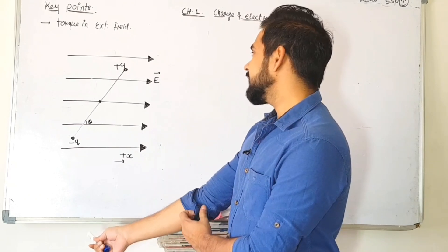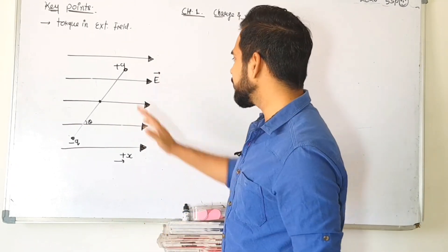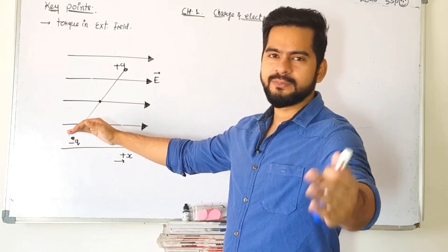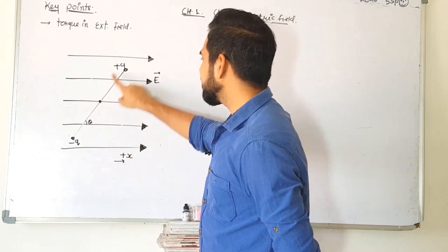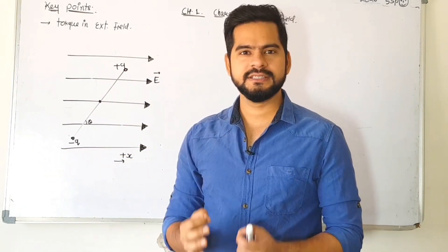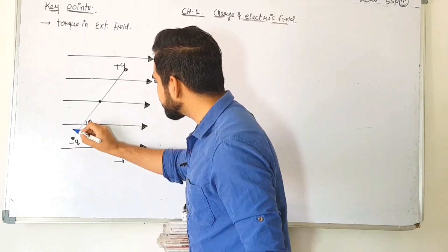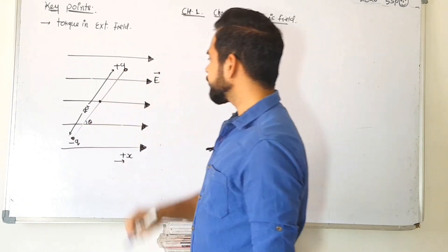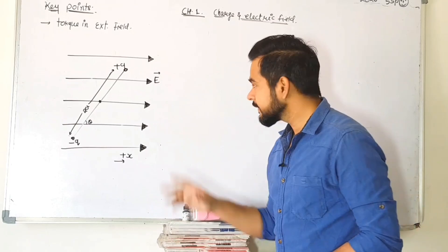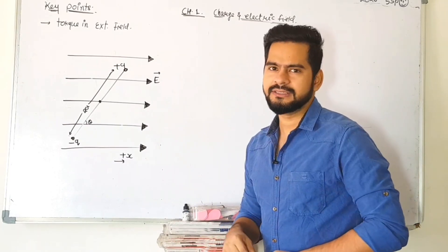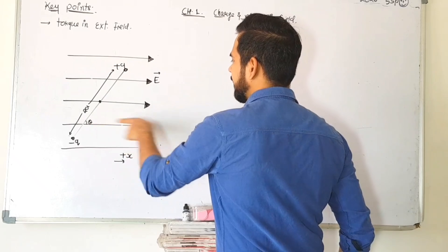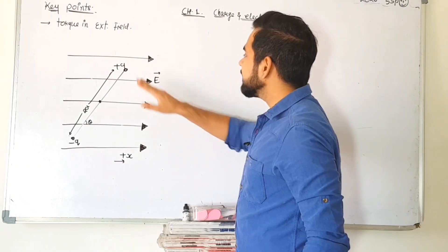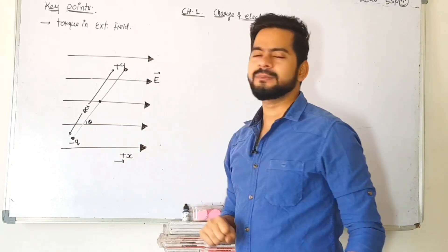Here we have a diagram. All these field lines are parallel to each other and equidistant from each other. We are placing a dipole — one positive charge and one negative charge, two unlike charges placed at a certain distance. The total distance between them we can represent as 2a. From the diagram, it is clear that this dipole is making an angle theta with the horizontal line of the electric field lines.